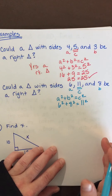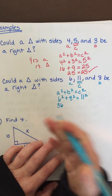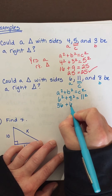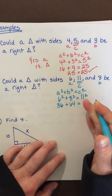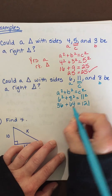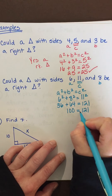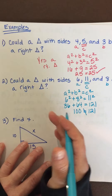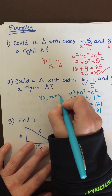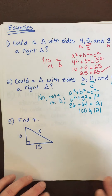6 squared is 36, 8 squared is 64, and 11 squared is 121. 36 plus 64 equals 100, and 100 is not the same as 121. So this is not a right triangle.